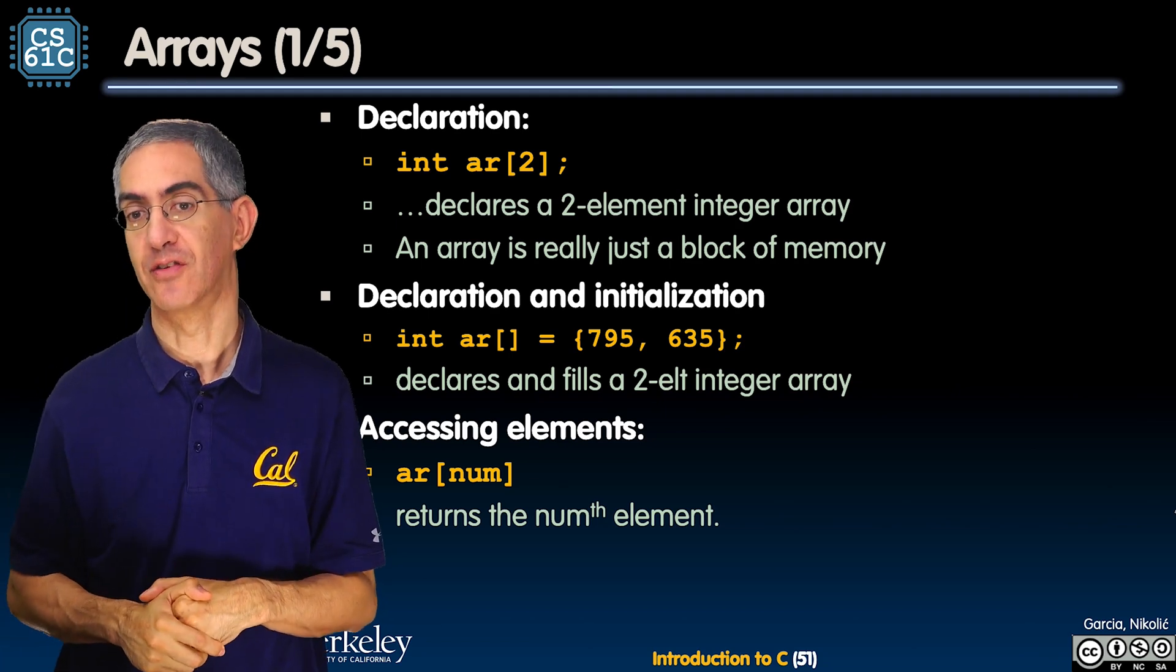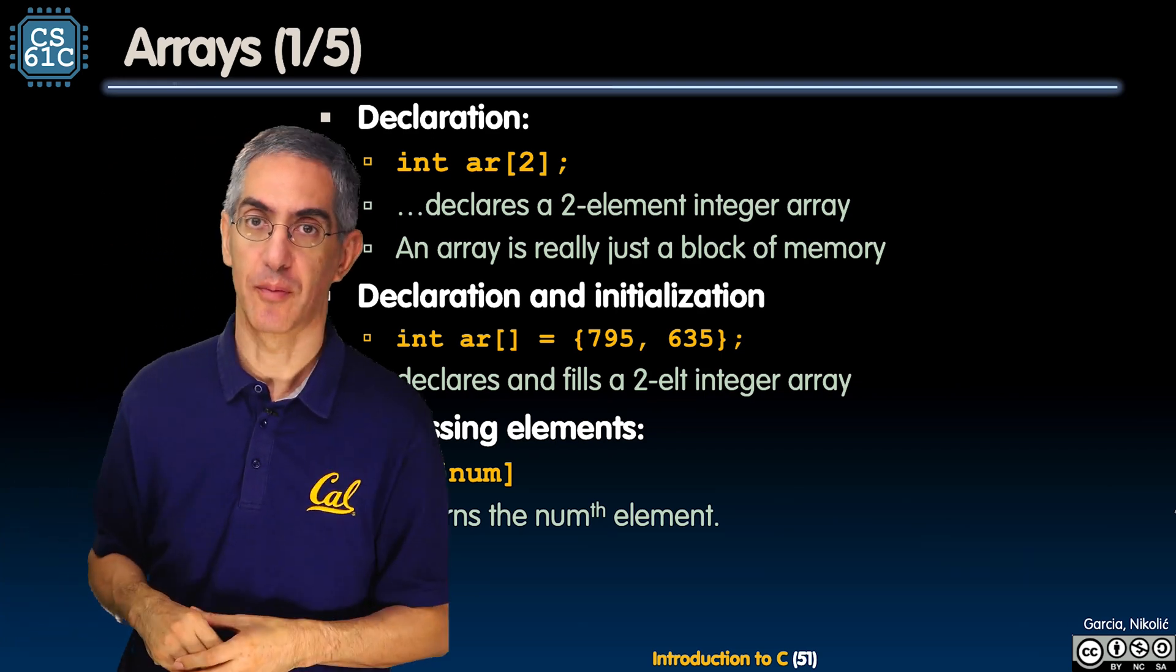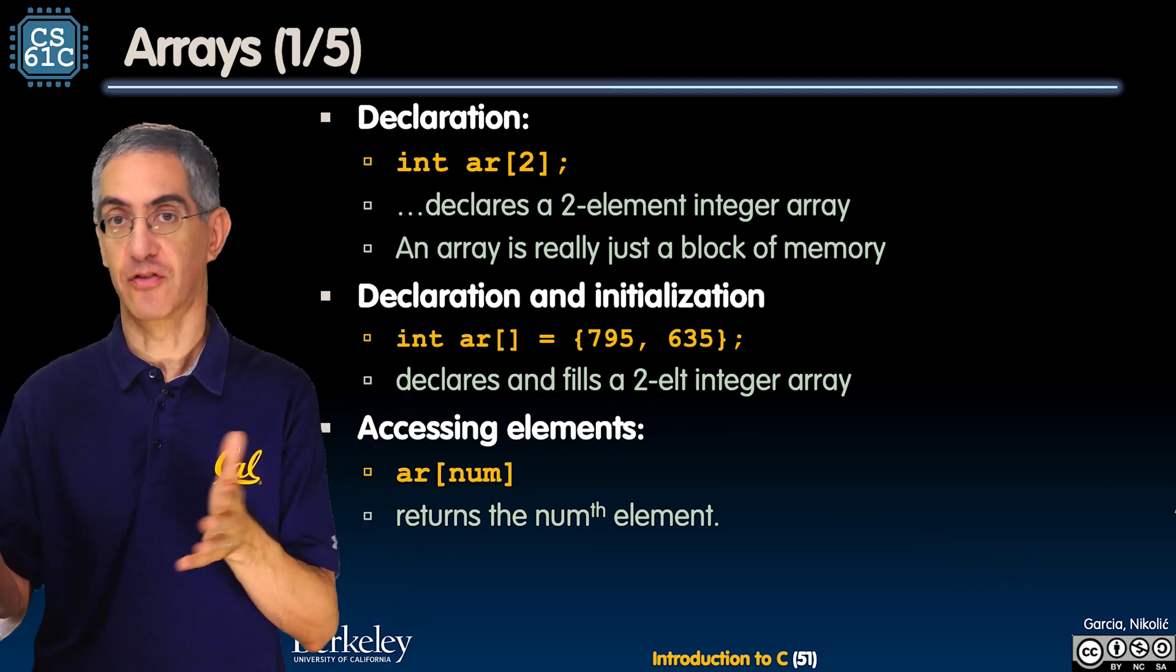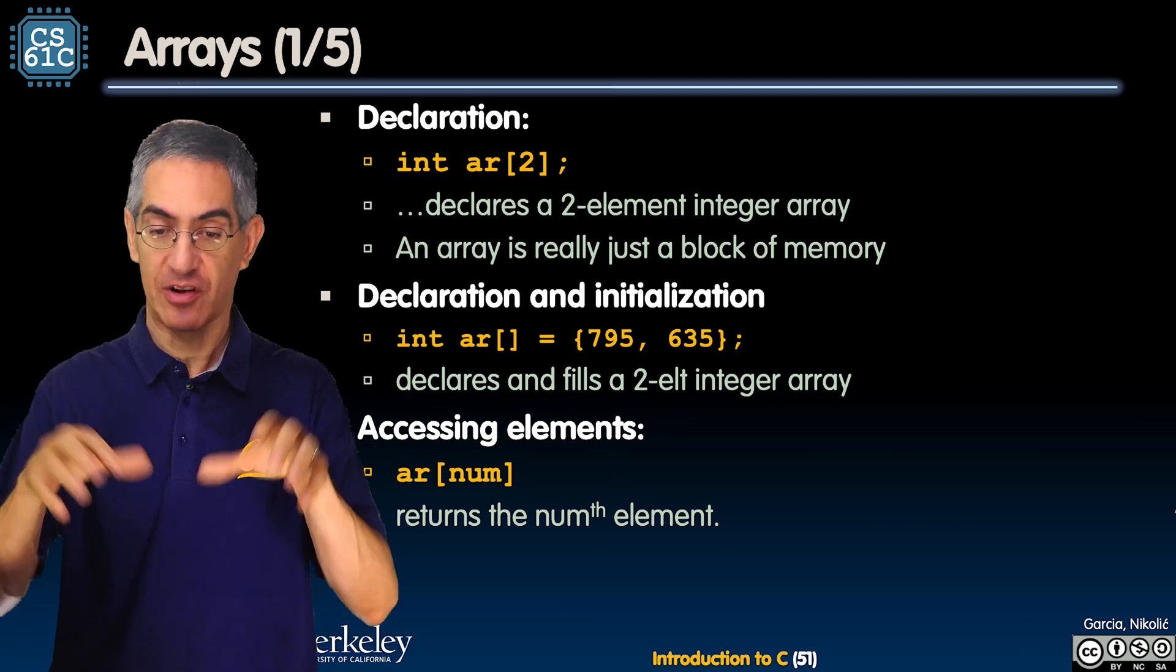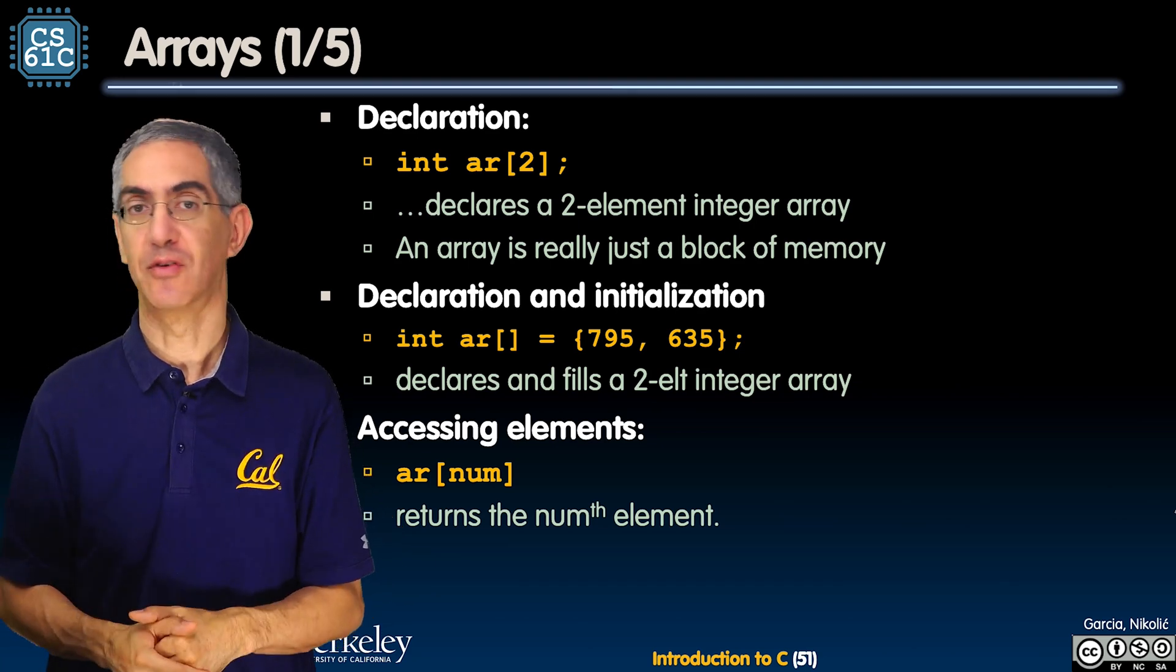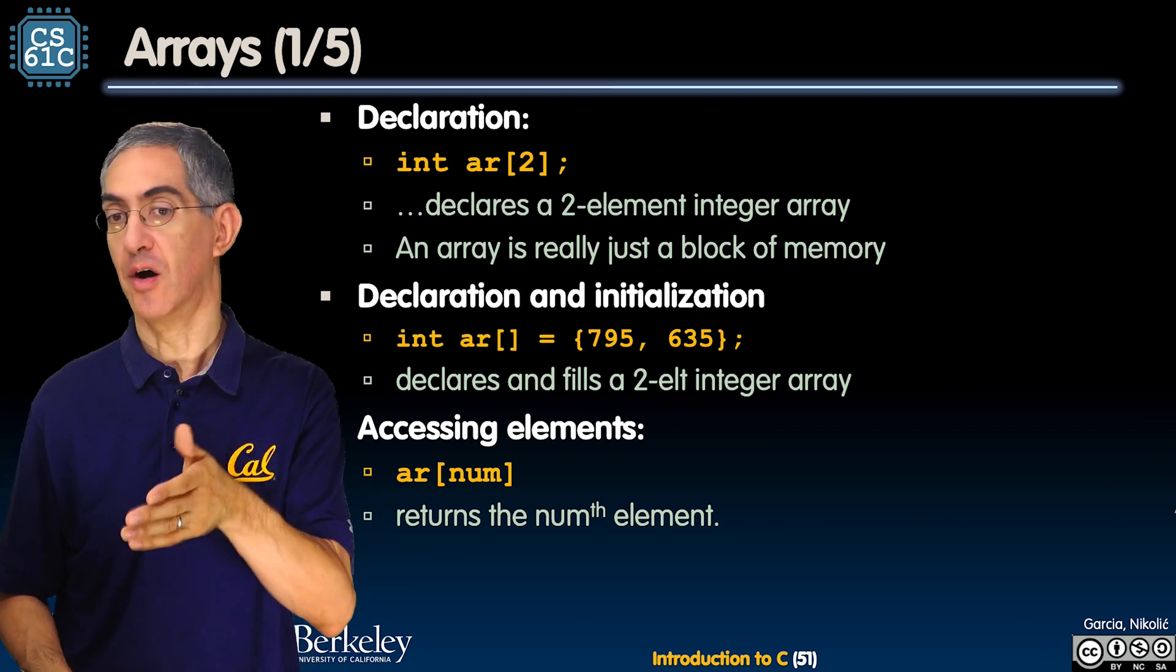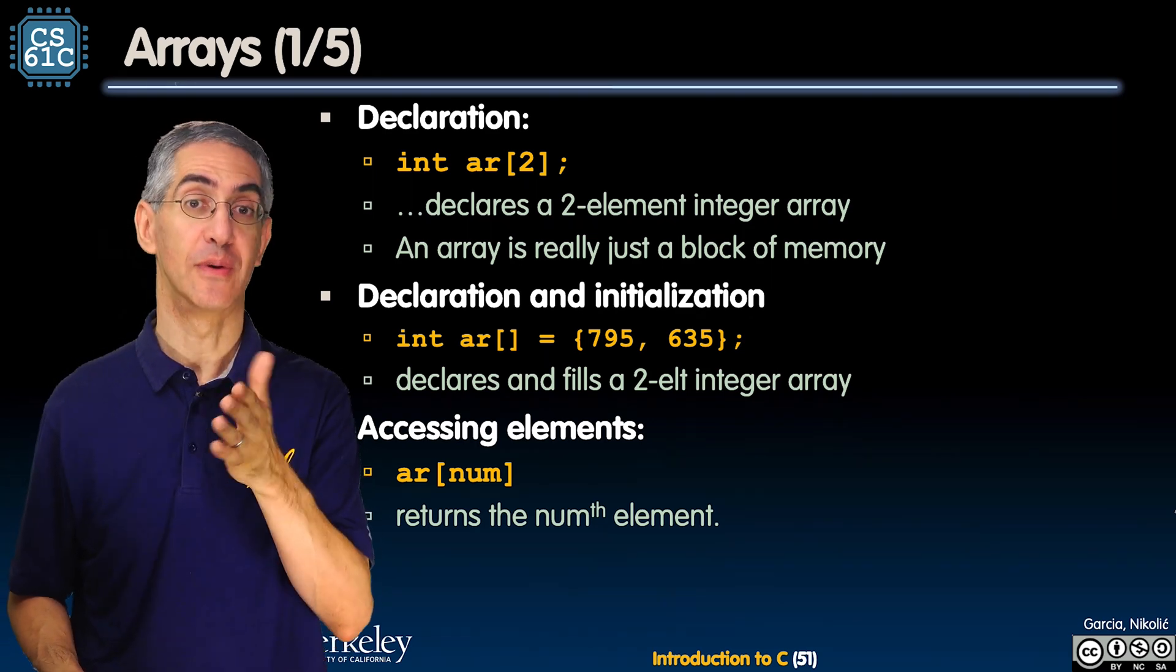You can also declare and initialize them at the same time without saying the space. So ar[] equals two numbers initializes those two spots and says there's gonna be two of them. And the way you access them is the square bracket notation you've seen from Python and from Java. ar[num] where num is some value, and it's zero indexed, which is really important.